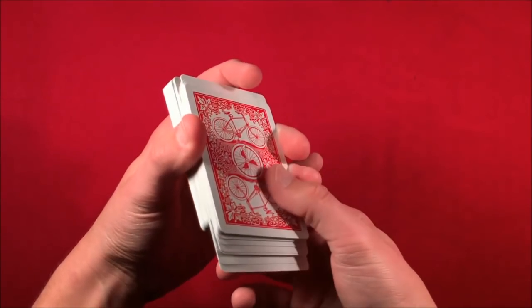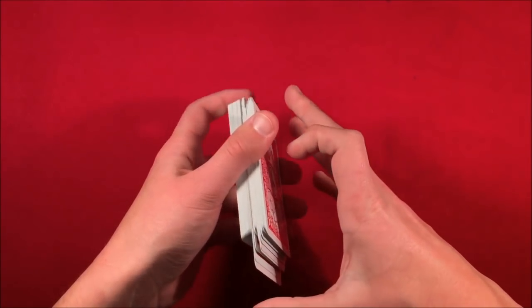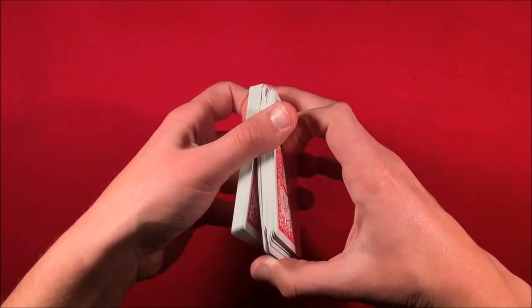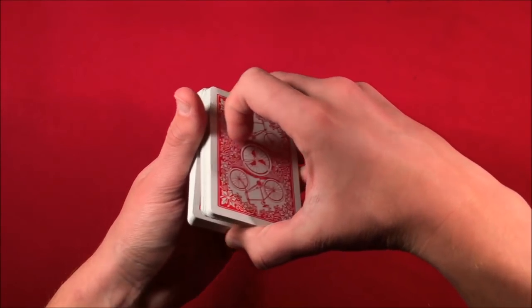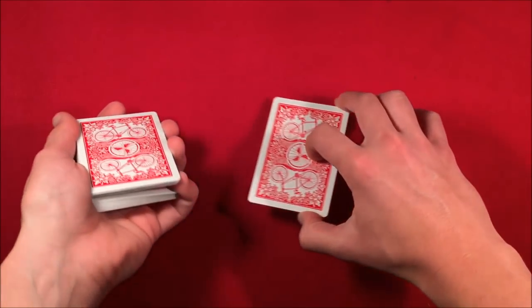As you can see when you dribble the cards down, from this point you can pick up the cards - they're out-jogged - and transfer it to a thumb break. Then you can cut the cards down, bringing that selected card to the top.